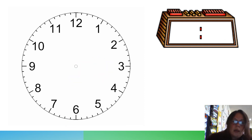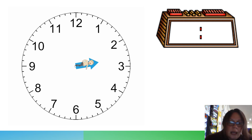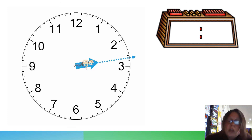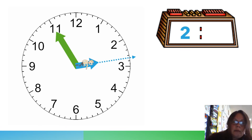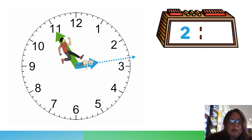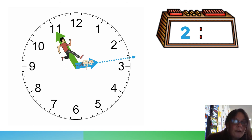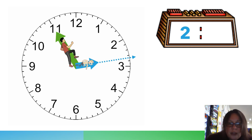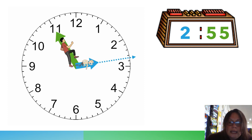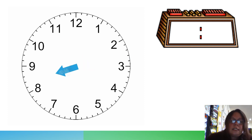Let's do another one. What time do you think it is? Don't say three — it's not three yet. When I extend the hand a little bit, it's still in the two o'clock hour. If you're never really sure, just extend that line a little bit more to see. So we are in the two o'clock hour. Now let's see how many minutes — we're at 11 on the clock. We go 5, 10, 15, 20, 25, 30, 35, 40, 45, 50, 55. So our time is 2:55, and we're right!